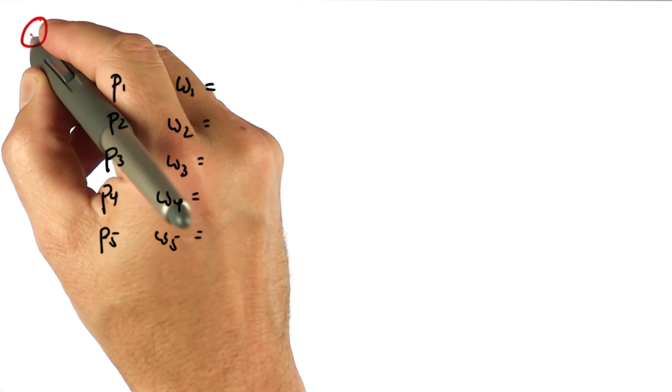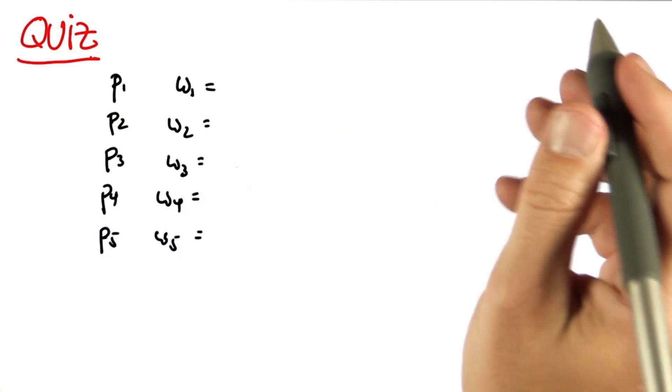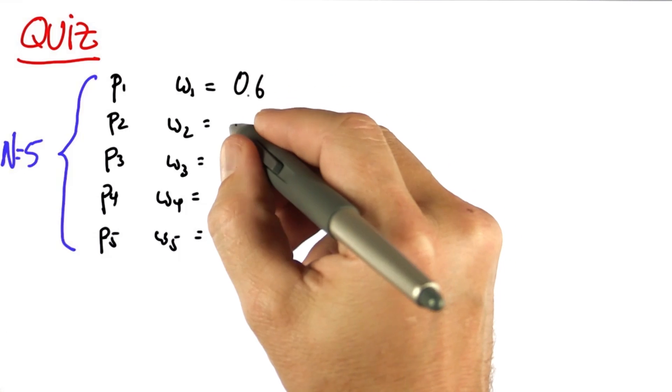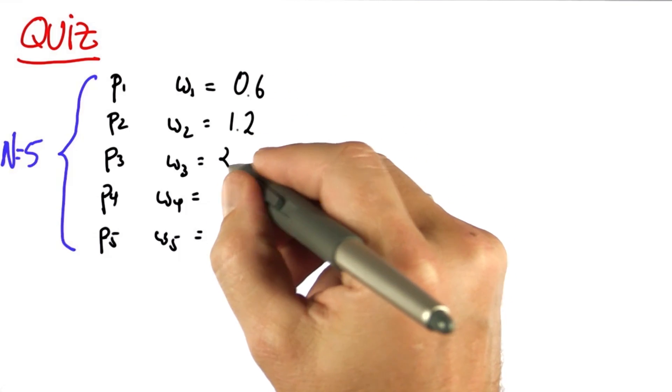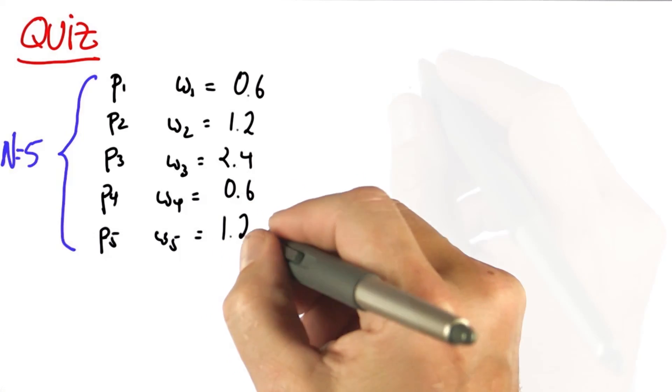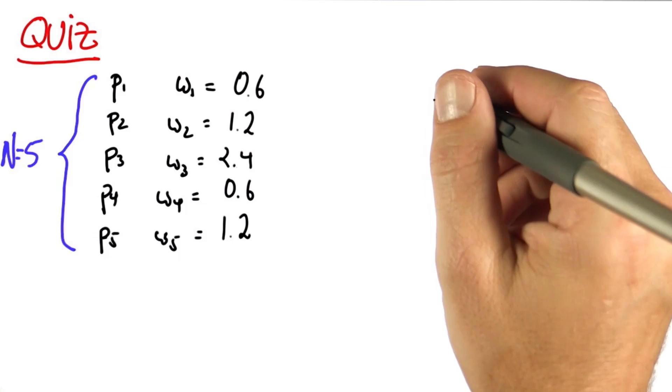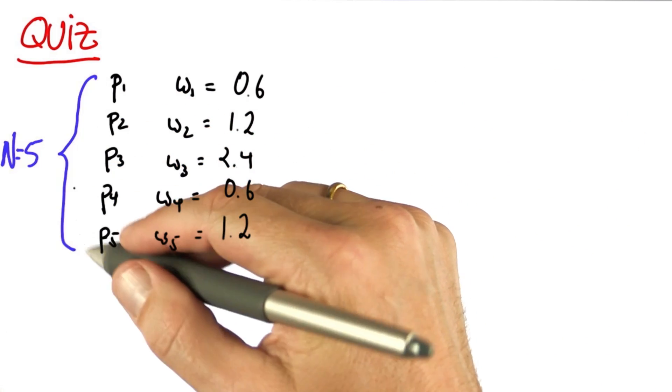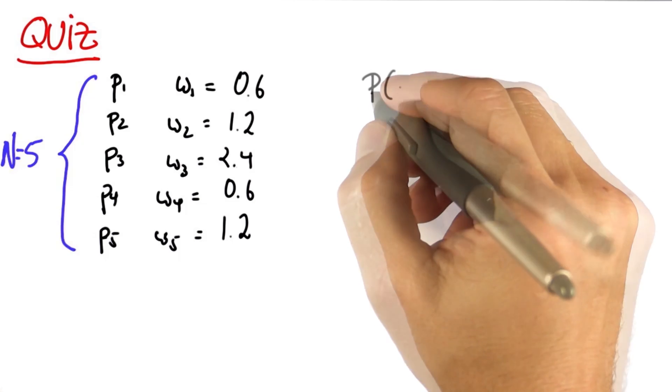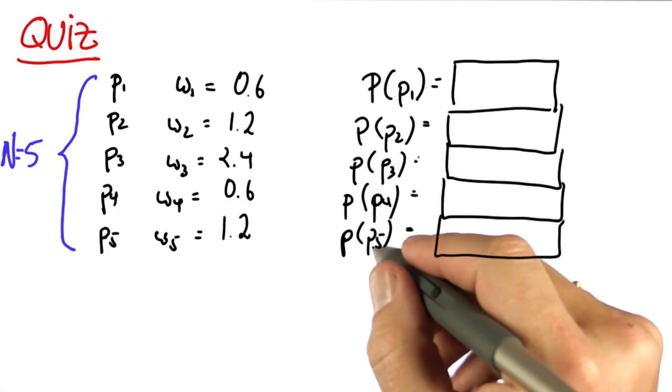So to make sure you understand this, let me ask you a couple of quizzes. Suppose we have five particles with the following importance weights: 0.6, 1.2, 2.4, 0.6, and 1.2. If I, in the process of resampling, randomly draw a particle in accordance to the normalized importance weights, what is the probability of drawing p1, p2, p4, and p5?